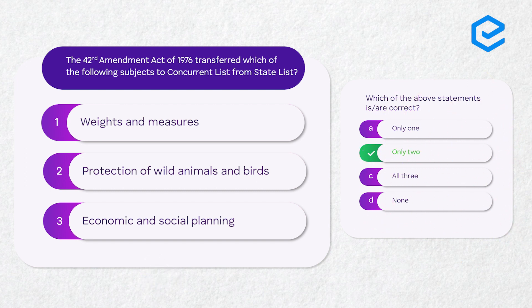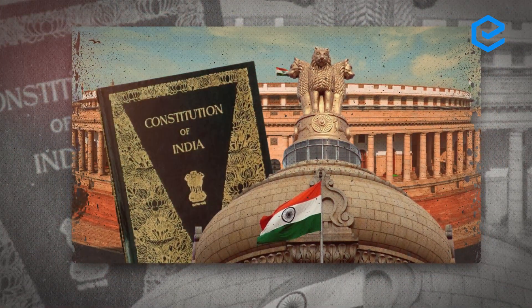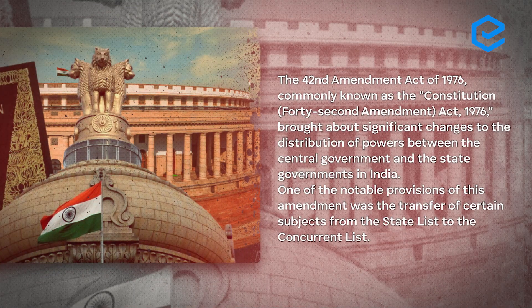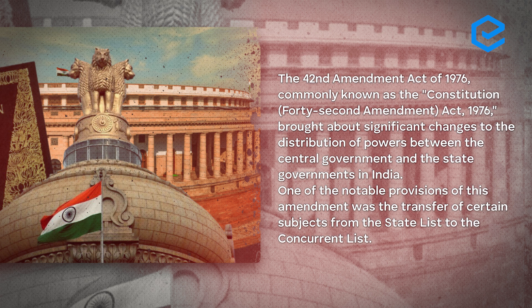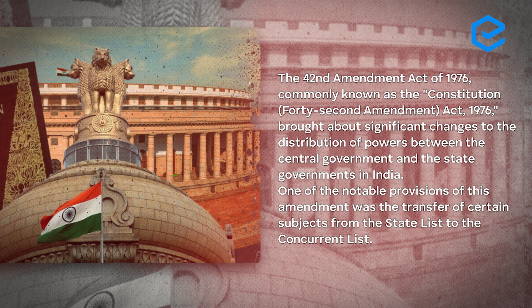The 42nd Amendment Act of 1976, also called the 'mini constitution' because it changed many provisions, also affected distribution of powers between the central and state governments. Certain subjects were transferred from the state list to the concurrent list. You should know the difference: in the concurrent list, both the state and center can legislate. By default, execution is done by the state, but if the center makes a law specifying that the center will execute it, then the center does so. Generally, concurrent list laws are executed by the state but can be legislated by both.